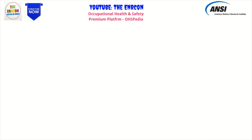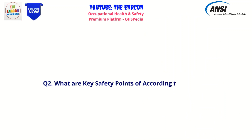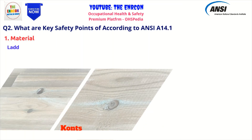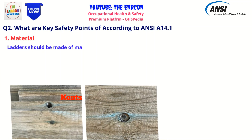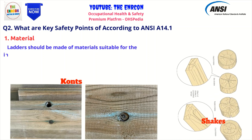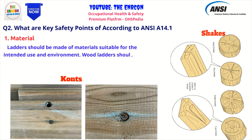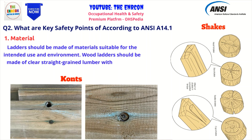What are the key safety points according to ANSI A14.1? 1. Material – Ladders should be made of materials suitable for the intended use and environment. Wood ladders should be made of clear straight-grained lumber without knots, shakes, or other defects that may affect strength.